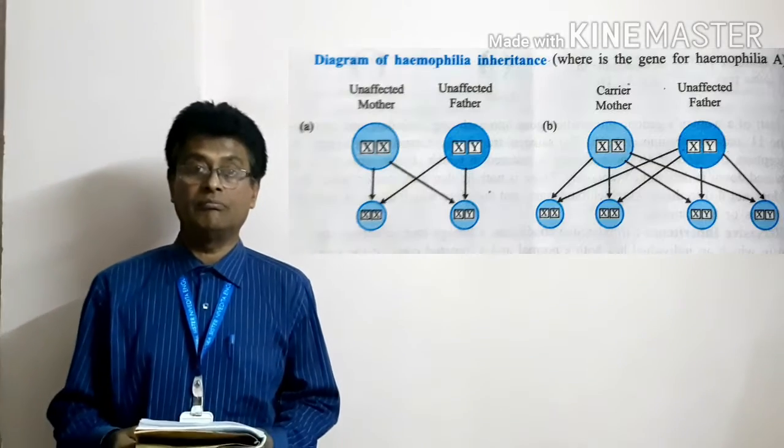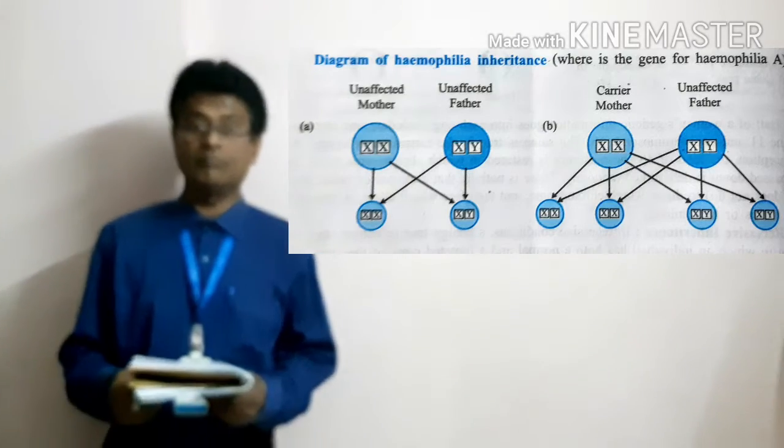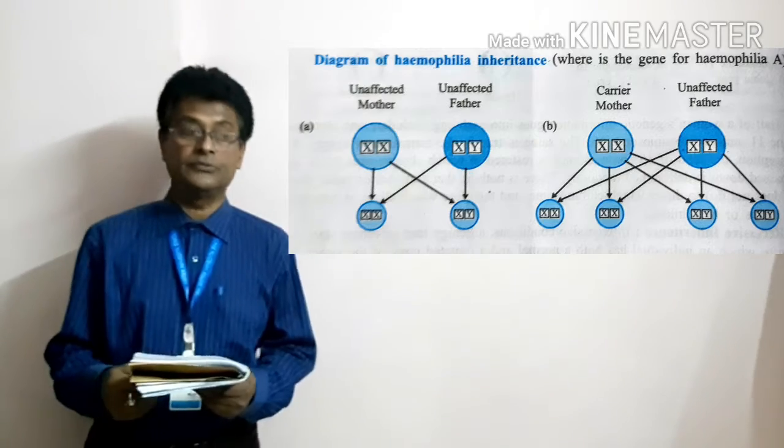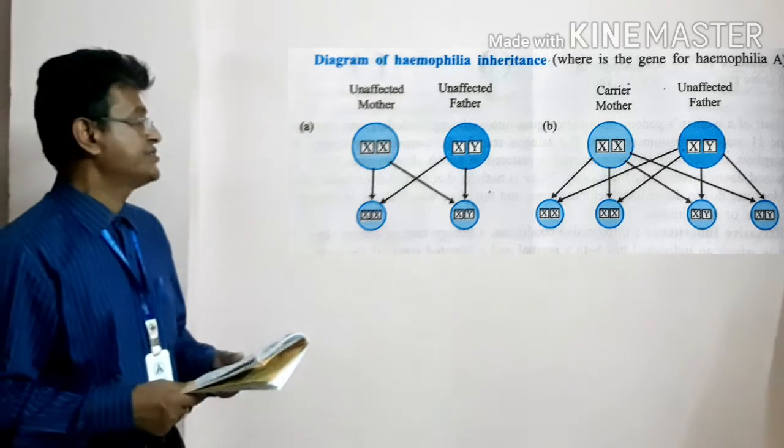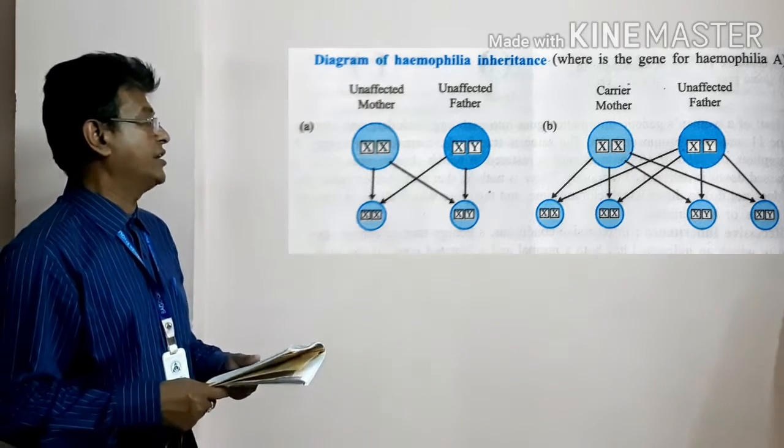Question number 4. Draw the gene for Haemophilia A. Here is the diagram.